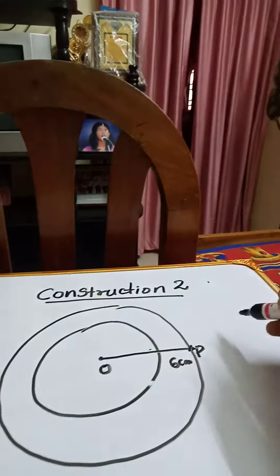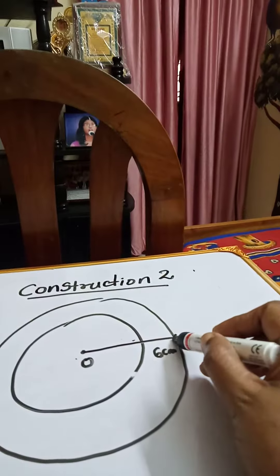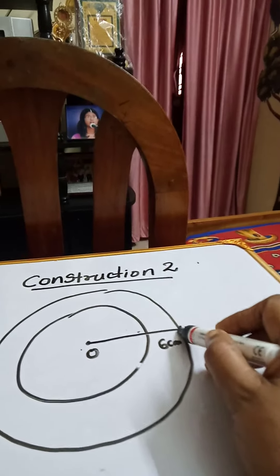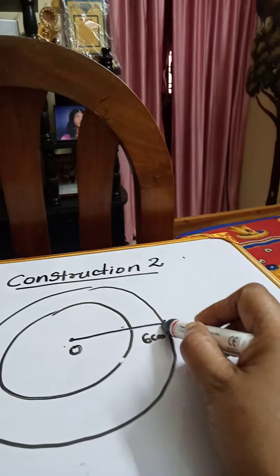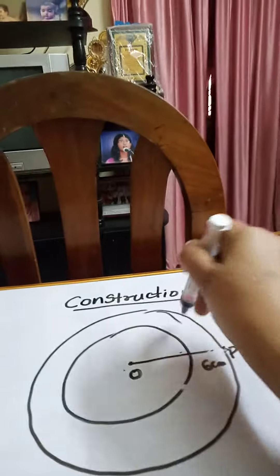Using the same method, take OP as our line segment and construct its midpoint using the perpendicular bisector construction. So from P, more than half, cut an arc on up and down.